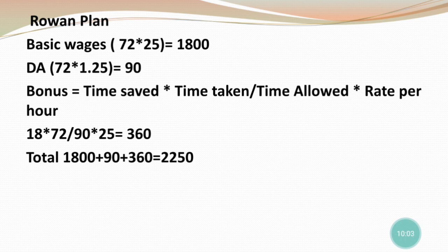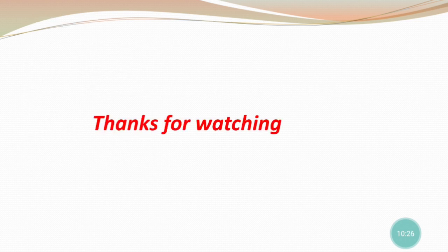The rate per hour is 25, giving a Rowan bonus of 360. So total Rowan earnings: basic wages 1800 + dearness allowance 90 + bonus 360 = 2250. This is the overall basic calculation for Halsey and Rowan plans. Practice university questions using this method — for 10-mark questions on Halsey and Rowan, you will find it easy and score full marks.